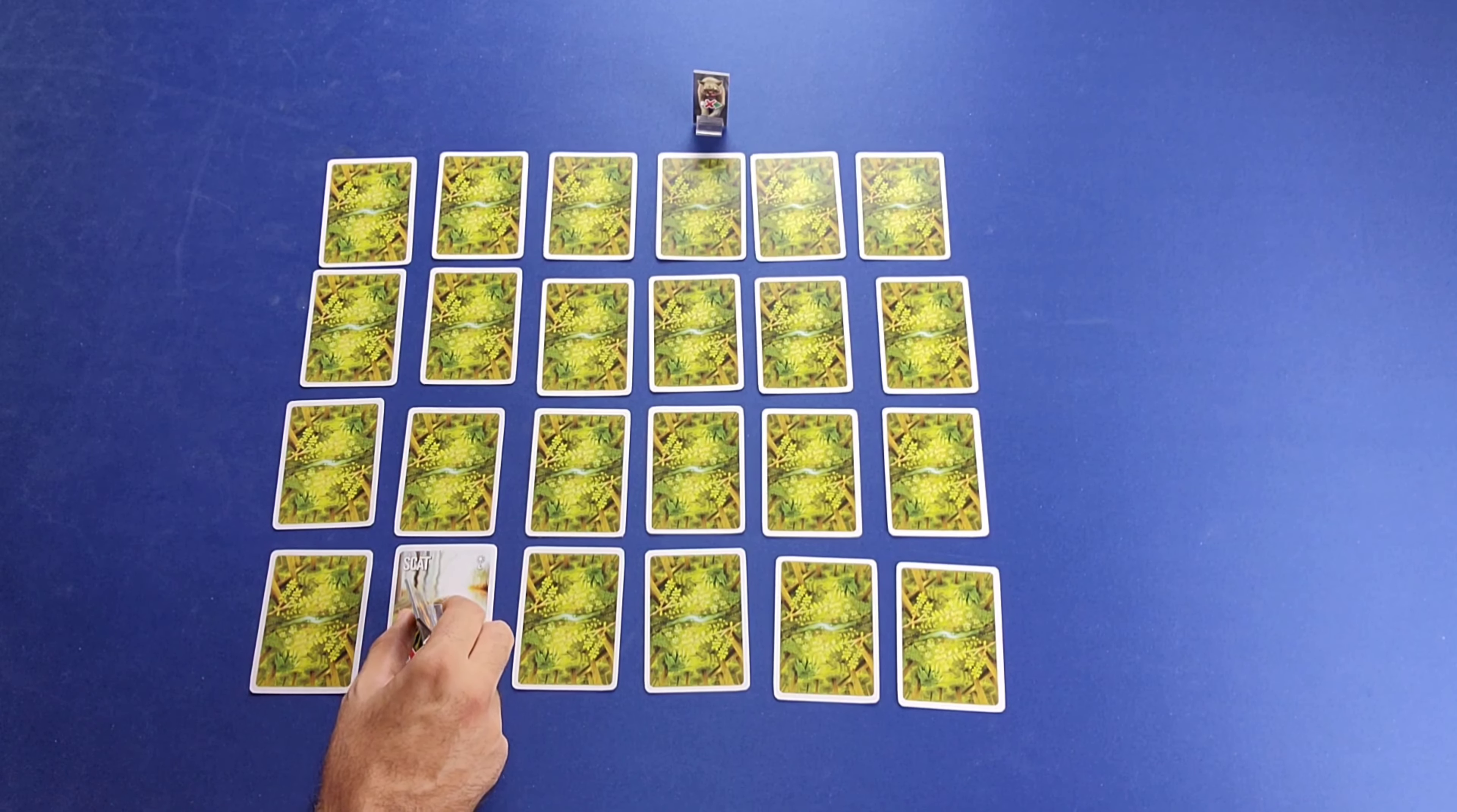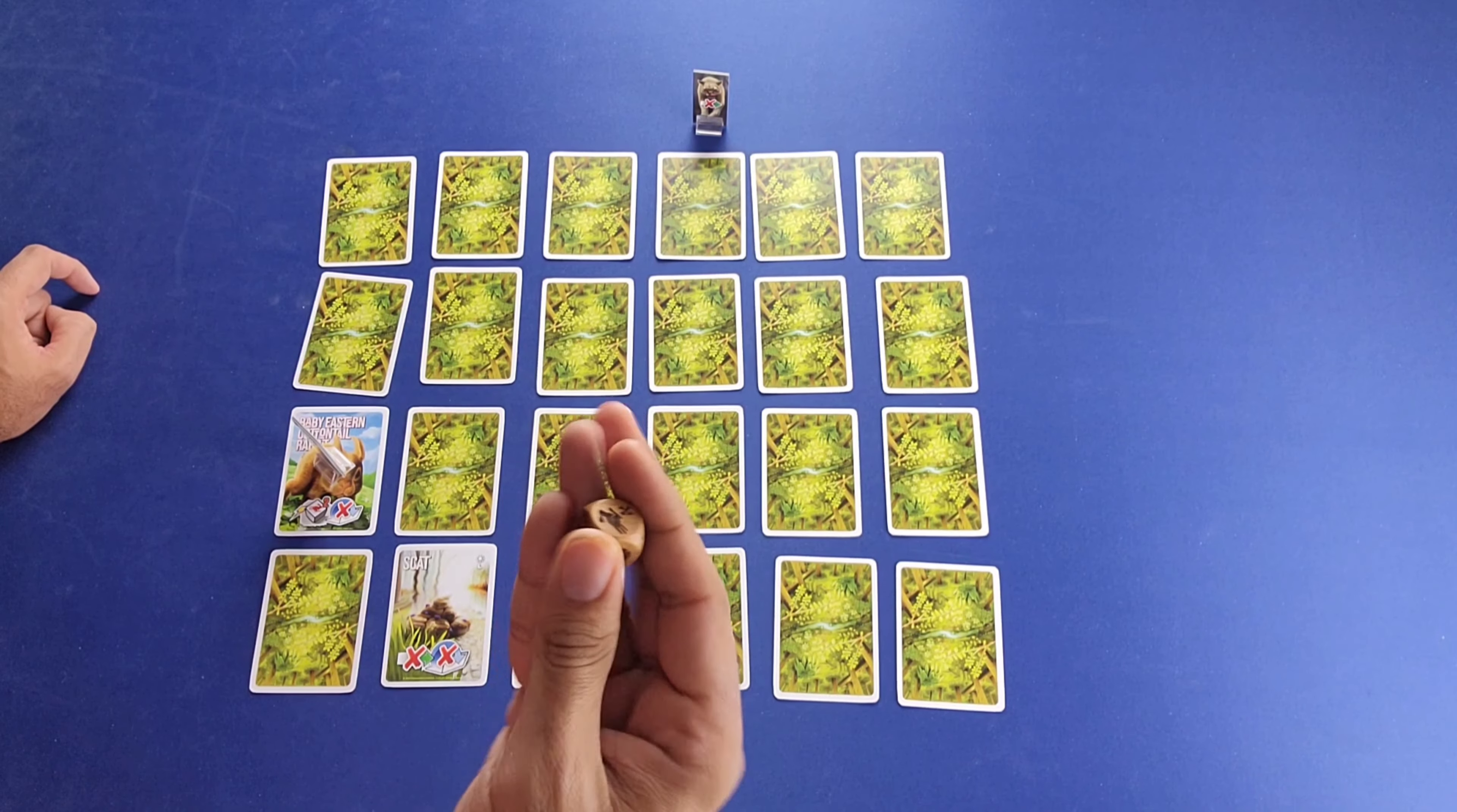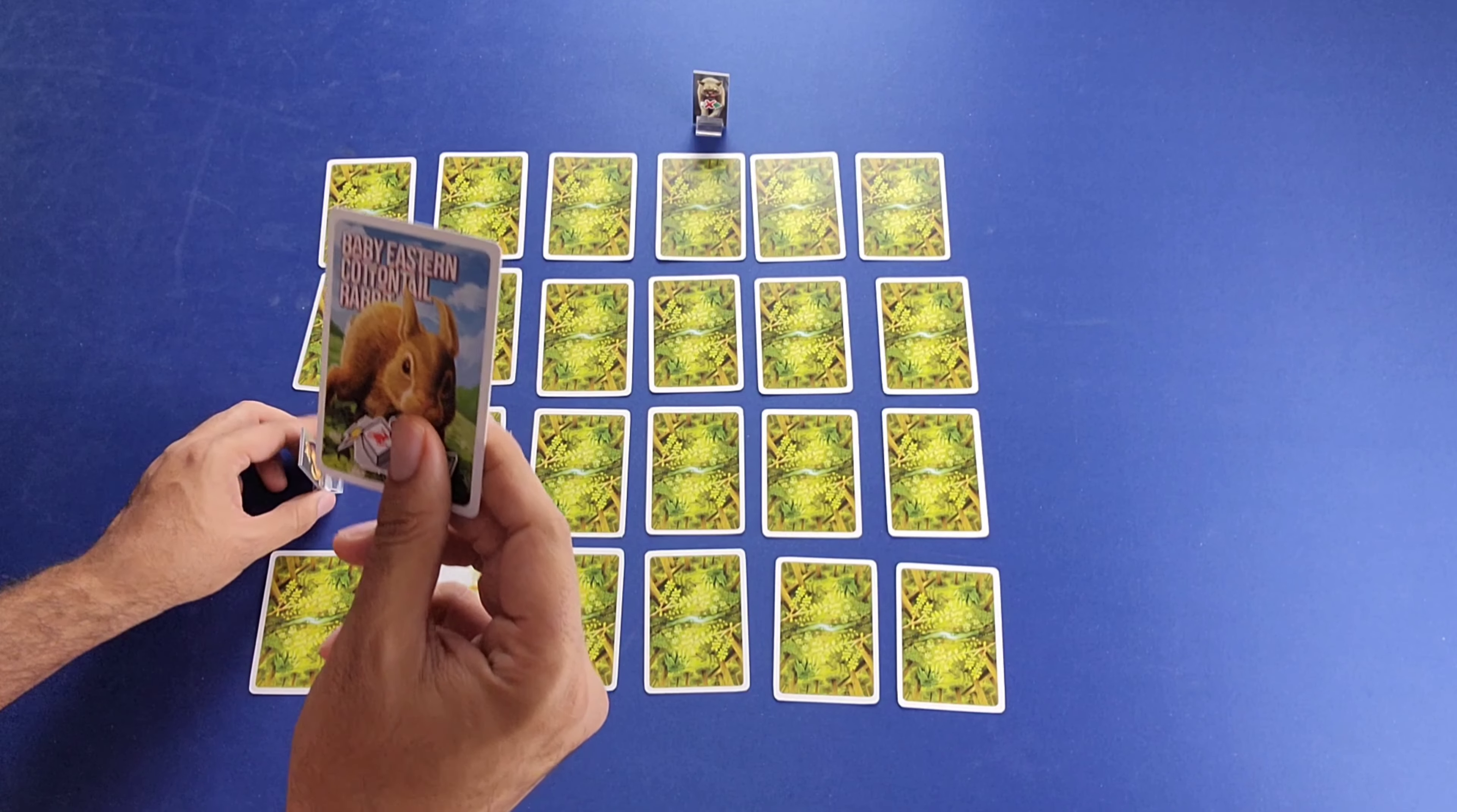We're done. We're going to move this guy one more space. And now I'm going to go one and two over here and flip this over. And here we've got the baby eastern cottontail rabbit. So now we're going to have a rabbit encounter. What's going to happen is we're going to roll this six-sided die. And if I roll anything that does not have a bunny rabbit icon on it, I will have successfully captured this rabbit. And I did. I rolled this bird symbol here.